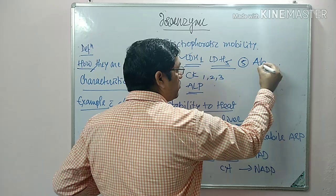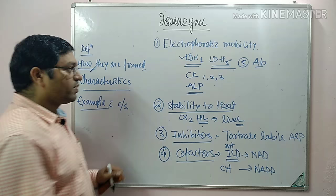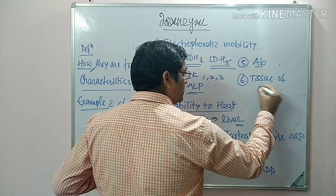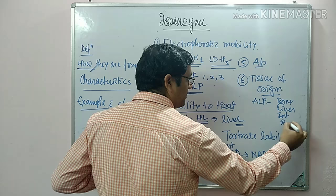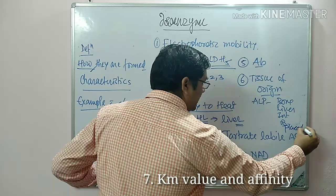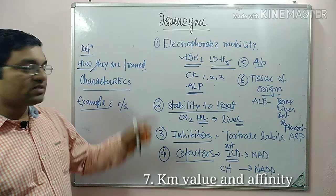The fifth characteristic is sensitivity to antibodies — different isoenzymes are sensitive to different antibodies. The sixth is tissue of origin. For example, the six isoenzymes of alkaline phosphatase come from bone, liver, intestine, biliary tree, placenta, and leukocytes — leukocyte alkaline phosphatase.